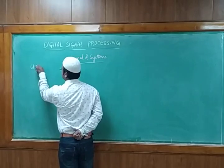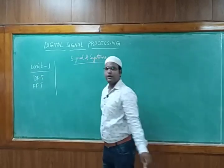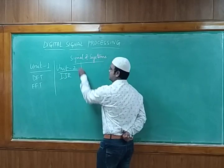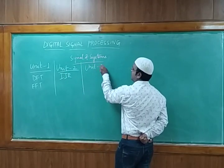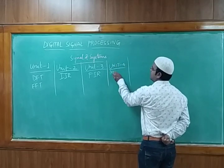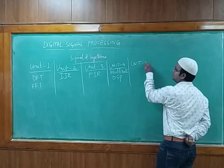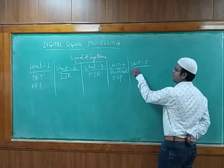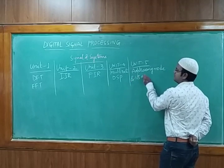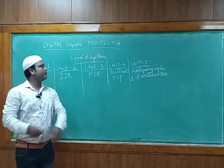In today's session we are going to see what is Digital Signal Processing and what topics we are going to cover. We'll be having Unit 1 which completely deals with DFT and FFT. Unit 2 deals with IIR filters. Unit 3 deals with FIR filters. Unit 4 deals with multi-rate Digital Signal Processing, and Unit 5 is a continuation of Unit 4 covering addressing modes and instructions.